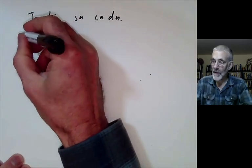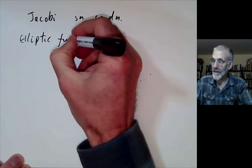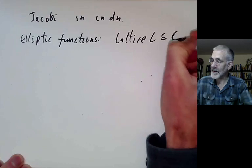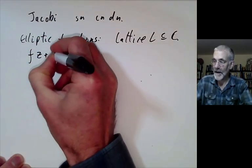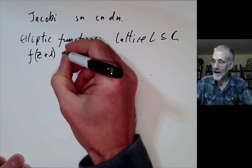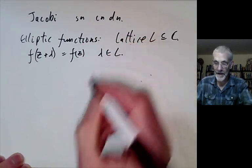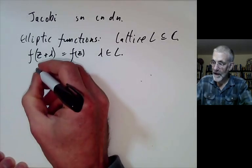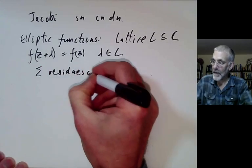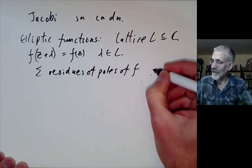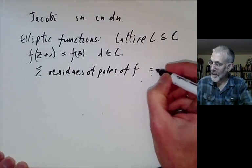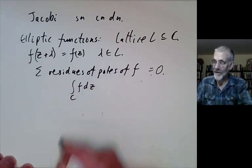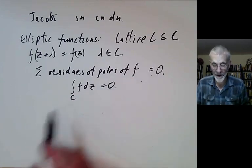Let me quickly recall the basics of elliptic functions. We have a lattice L in the complex numbers and our elliptic function is periodic in L, so f(z + λ) = f(z) whenever λ is in L. As we saw in previous lectures, f must have some poles and the sum of the residues of the poles of f in a fundamental domain must be equal to zero. We get this by integrating f dz around the boundary of a fundamental domain, which is zero because it cancels by periodicity.